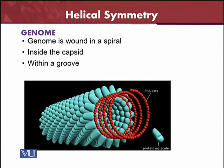The helical symmetry means the genome is wound in a spiral shape. The genome present inside — as with all living creatures — is always in a spiral shape, like a spring. This spiral-shaped genome is present inside the capsid, within a groove inside the helical capsid.